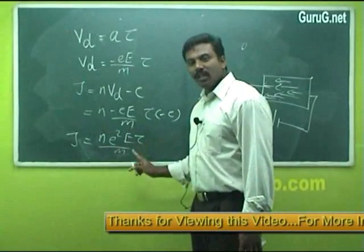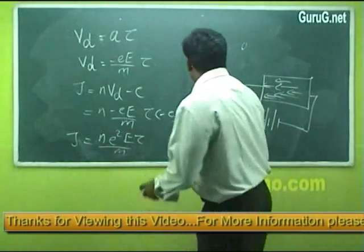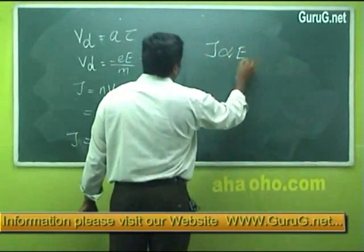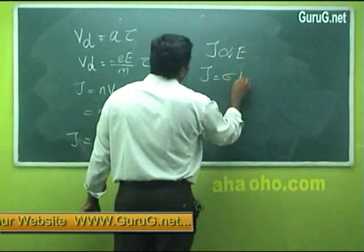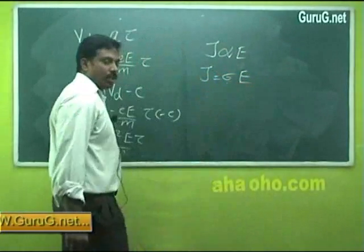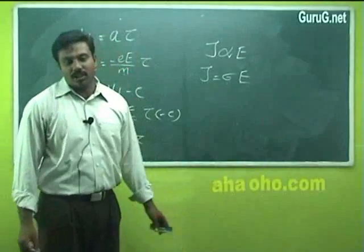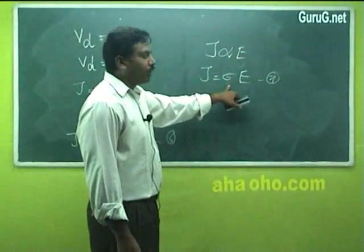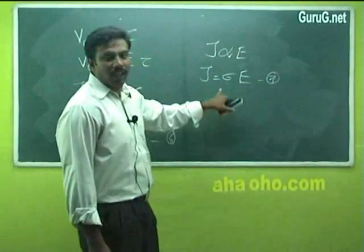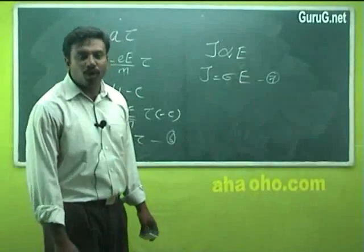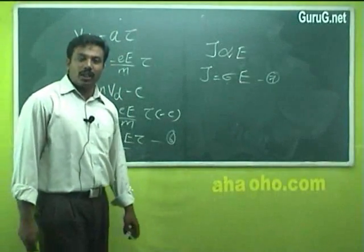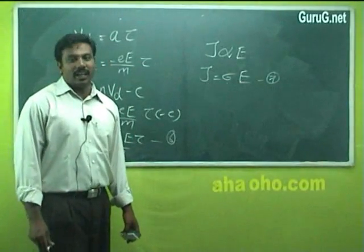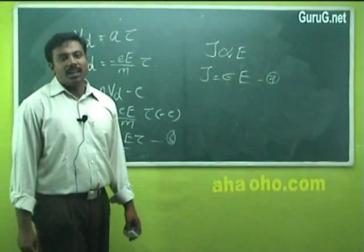When the applied electric field is more, the current produced will also be more. Therefore, J is directly proportional to E, or J = σE, where σ is called the coefficient of conductivity. The coefficient of conductivity is defined as the amount of electricity flowing per unit area per unit time when a unit potential gradient is maintained.